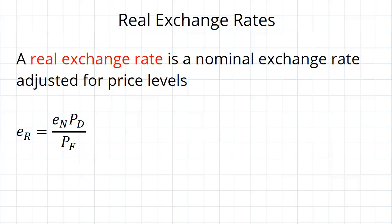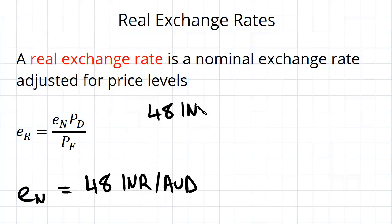Let's just give an example of an exchange rate. A nominal exchange rate, say between the Indian rupee and the Australian dollar. So 48 Indian rupees can be bought with one Australian dollar. The way we can interpret this now is that we've got 48 Indian rupees divided by one Australian dollar.